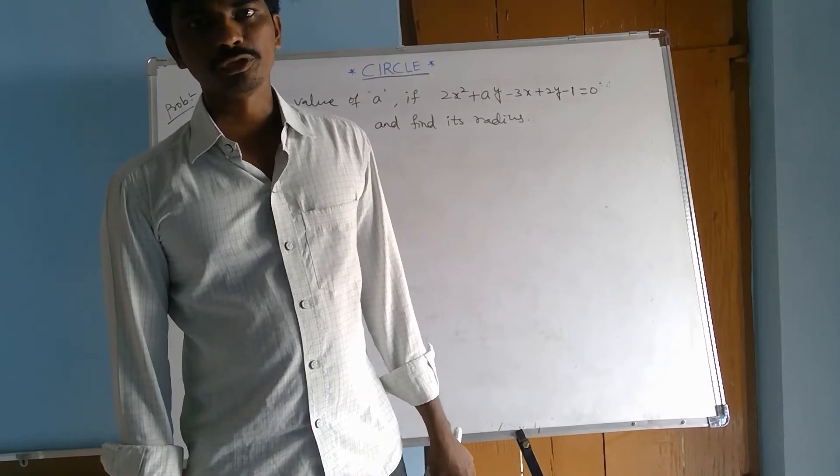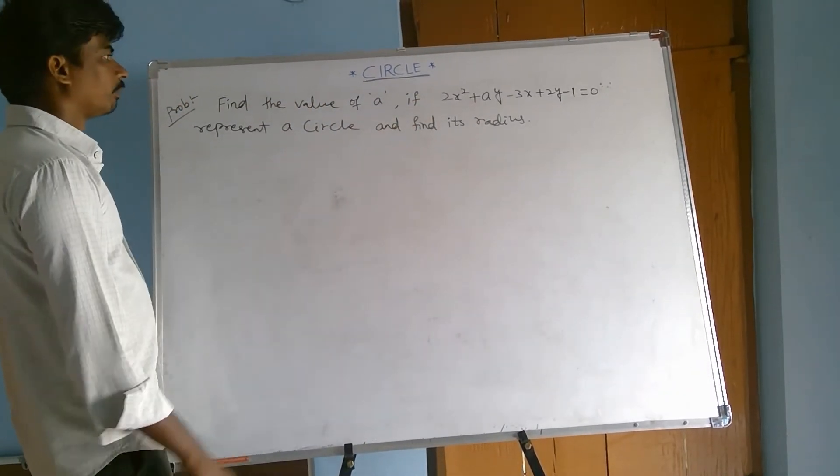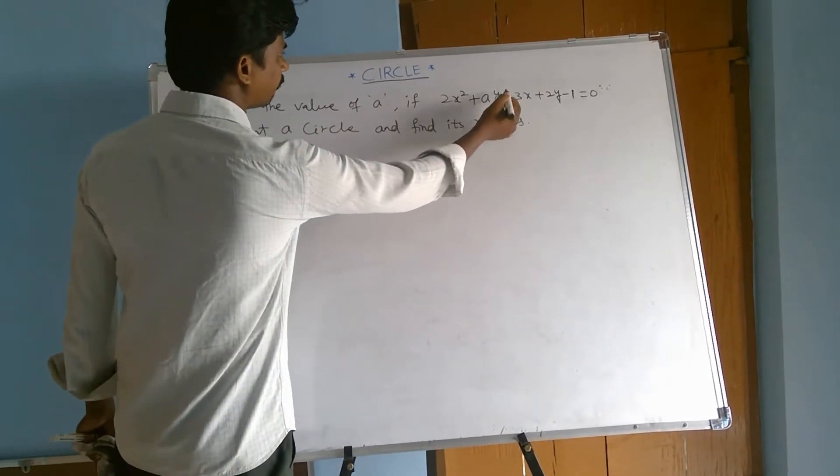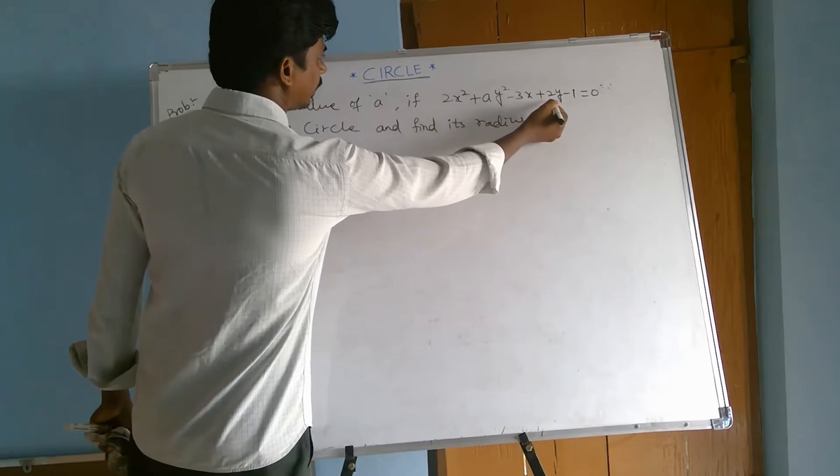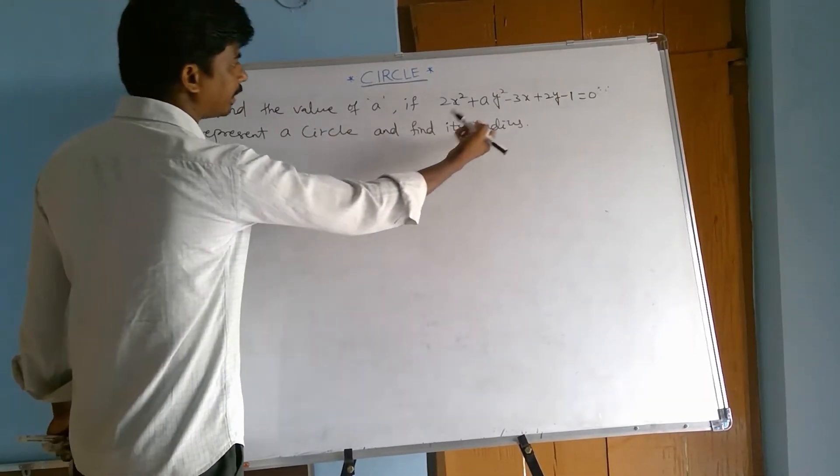Welcome to Rajesh Lekarul. Today our topic is circles. This is a very important problem. Find the value of a if 2x squared plus a y squared minus 3x plus 2y minus 1 equal 0 represents a circle and find its radius.